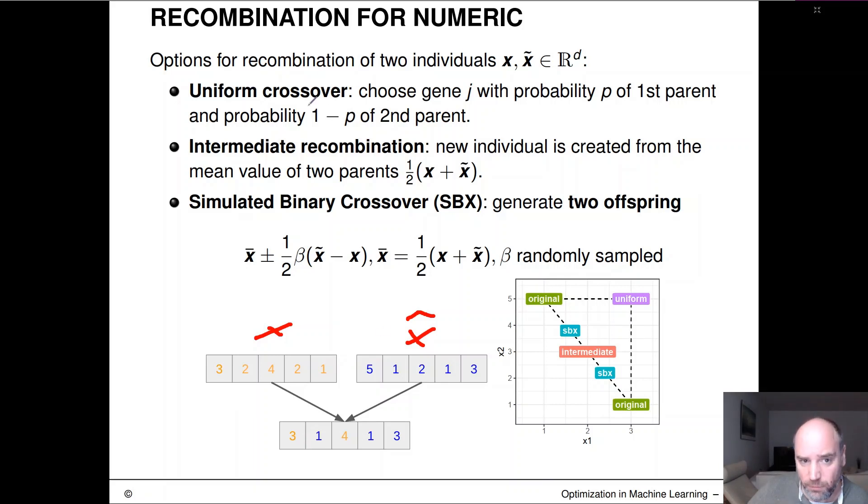And the first way of recombining these two guys through a crossover operation into a new offspring is simply uniform crossover. So we choose gene j, so maybe we are in the first gene, and we choose that with probability p from the first parent and probability 1-p from the second parent. And usually we set p to 0.5 because there's usually not a bias towards one parent or the other. So these two guys here would be selected with 50% probability.